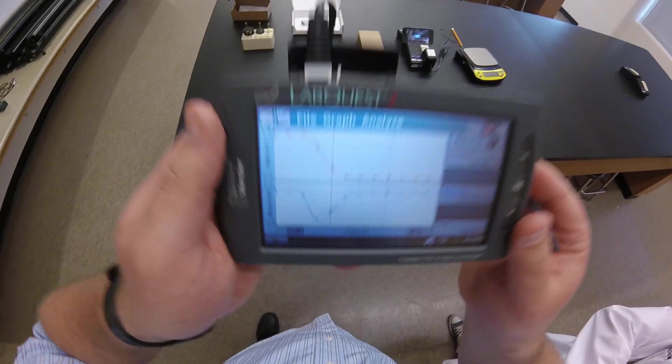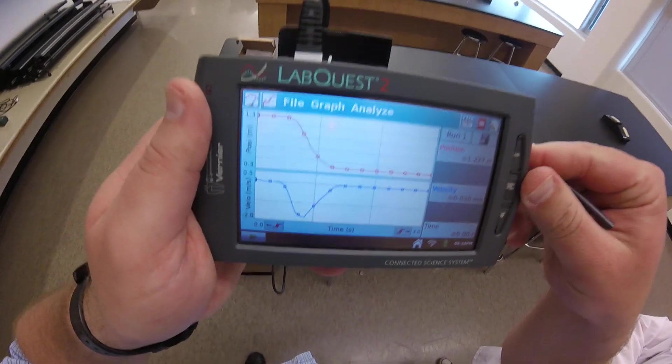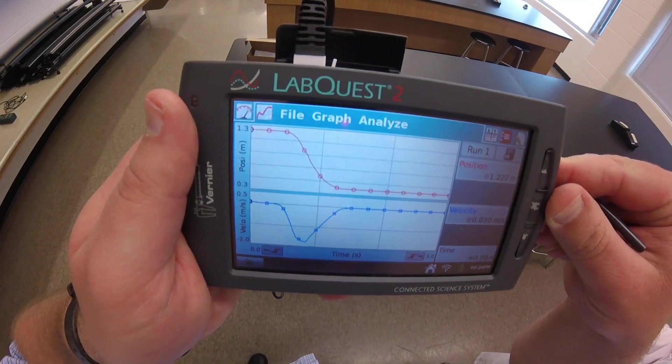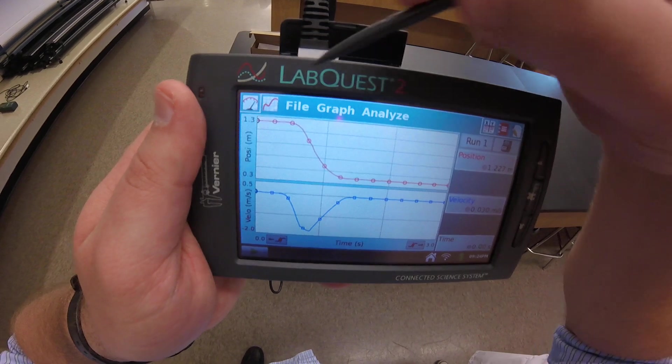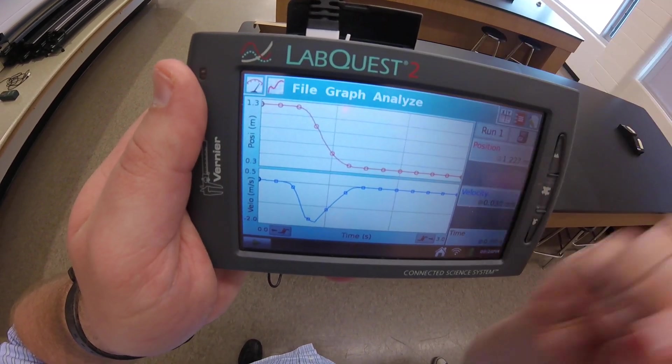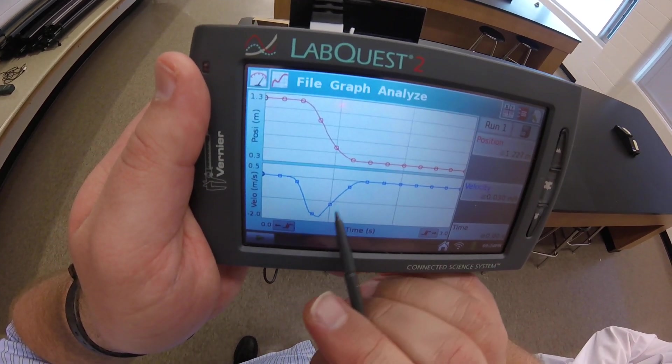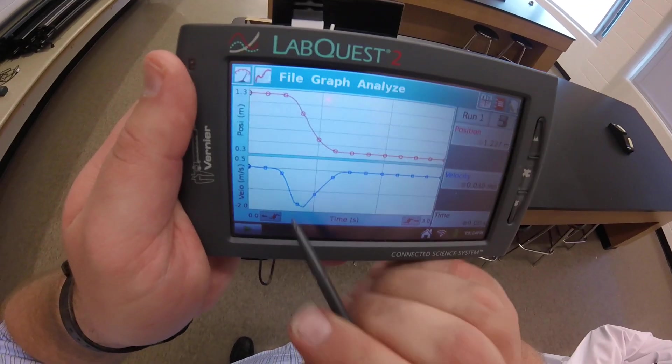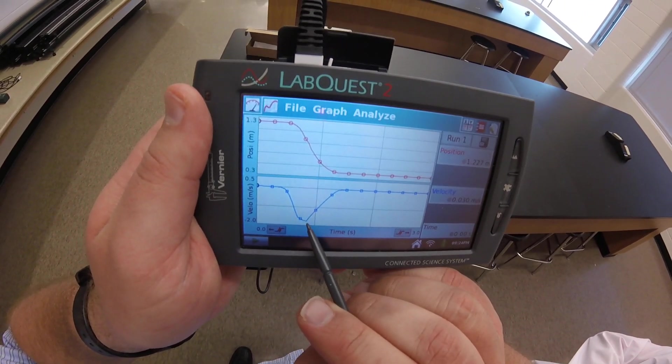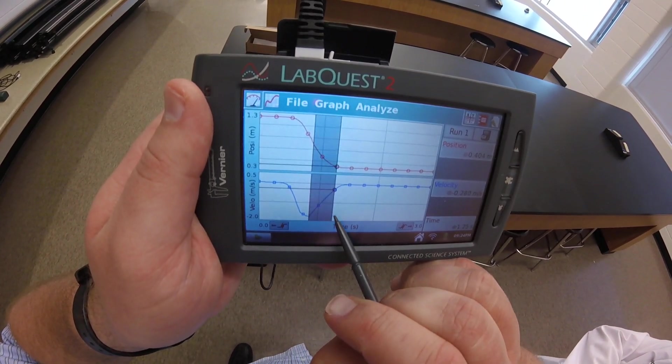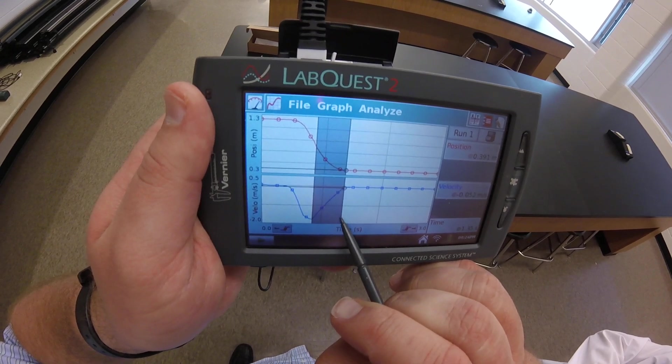All right. That's what we're looking for. That's the data we're looking for. So you can see nice, smooth data. The position changes at a nice, smooth rate. The velocity changes and starts at zero. Mr. Torcoletti accelerated it. Here's the region that we're interested in where the block was coming to a stop.